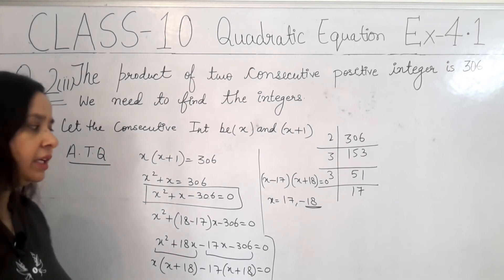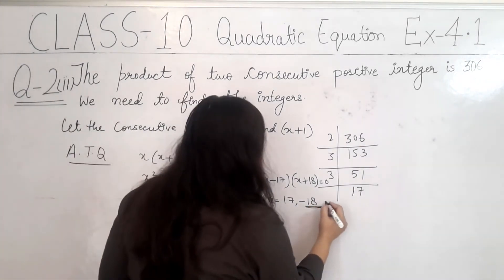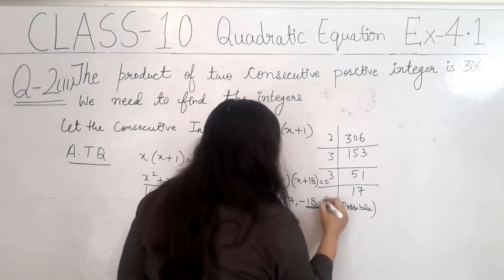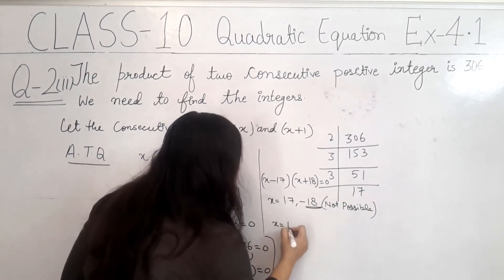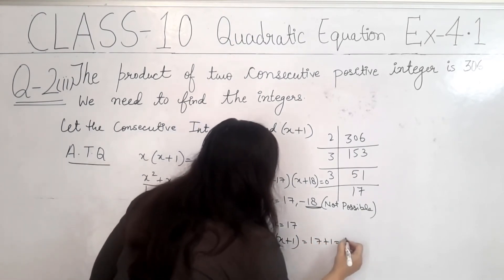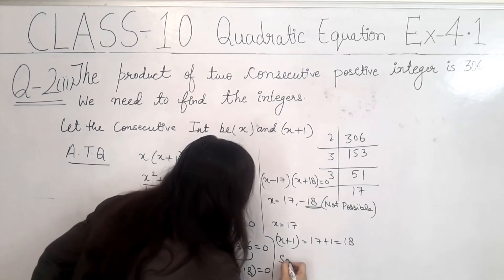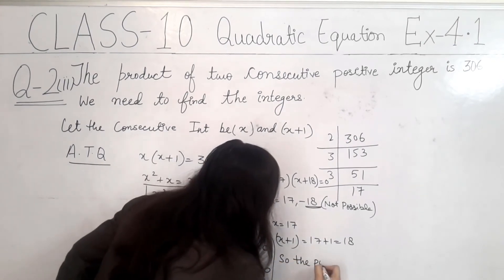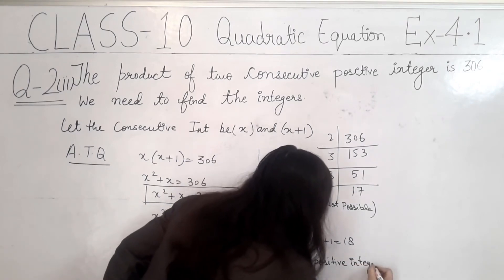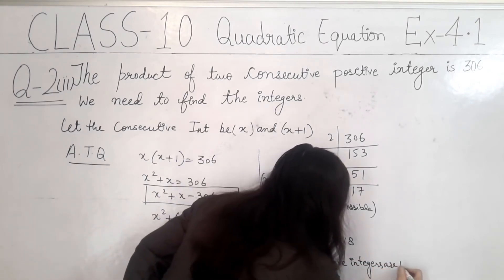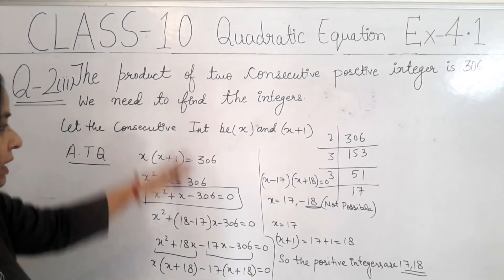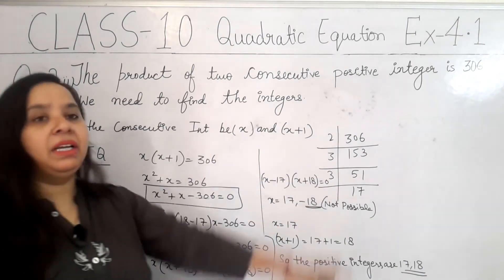So, you can see that we have taken the positive integers. So, minus 18 is not a positive integer so it is not possible. So, the answer is x is equal to 17 and x plus 1 is equal to 17 plus 1. So, the positive integers are 17 and 18. So, this is our answer. This is a very simple question. You can easily do this. You have to practice the mid-term split properly.